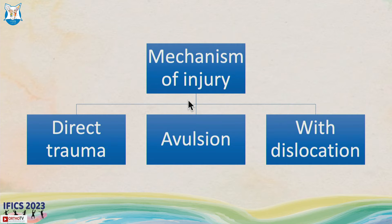The mechanism of injury involves three mechanisms. Direct trauma is very rare. More commonly, it is an avulsion injury due to a fall on the outstretched hand, or it can occur in association with elbow dislocation.